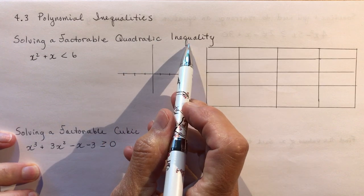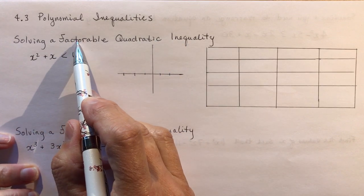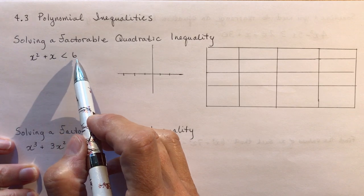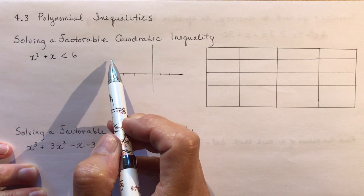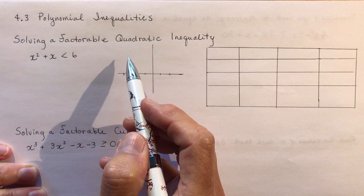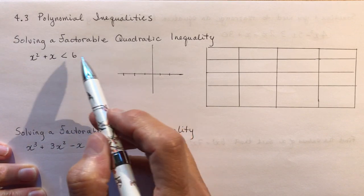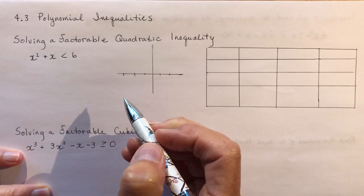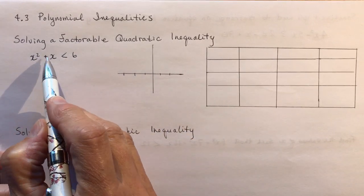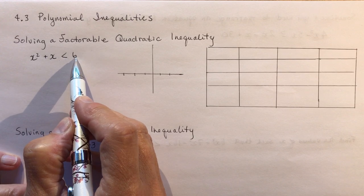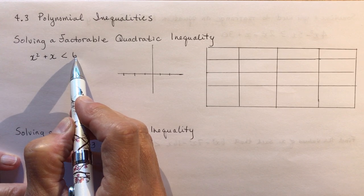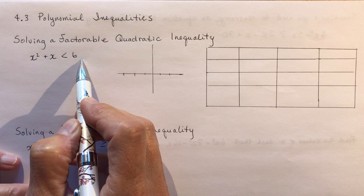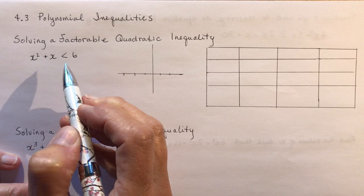Let's look at solving a factorable quadratic inequality. The keyword here is 'factorable' — you need to be able to factor this to find the zeros. You could also find the zeros using the quadratic formula. First things first, we've got a 6 on the wrong side of the equation; we need to bring it over to set the equation equal to zero so that we're finding the zeros of the function.